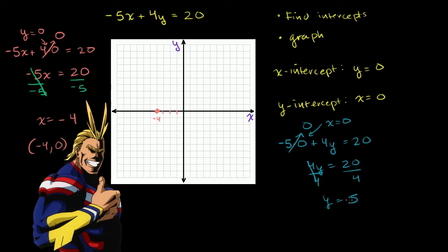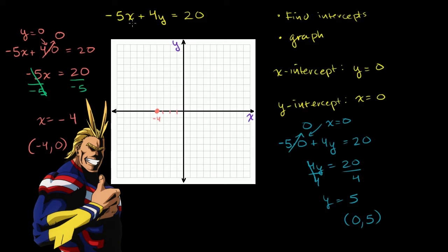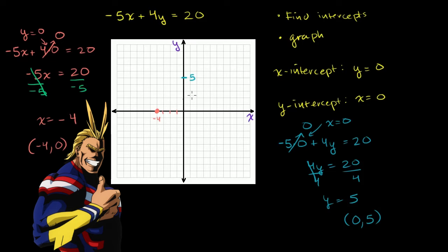So when x is equal to 0, y is equal to 5. So the point (0, 5) is on the graph for this line. So 0, 5—x is 0 and y is 1, 2, 3, 4, 5 right over there. And notice when x is 0, we're right on the y-axis. This is our y-intercept right over there.